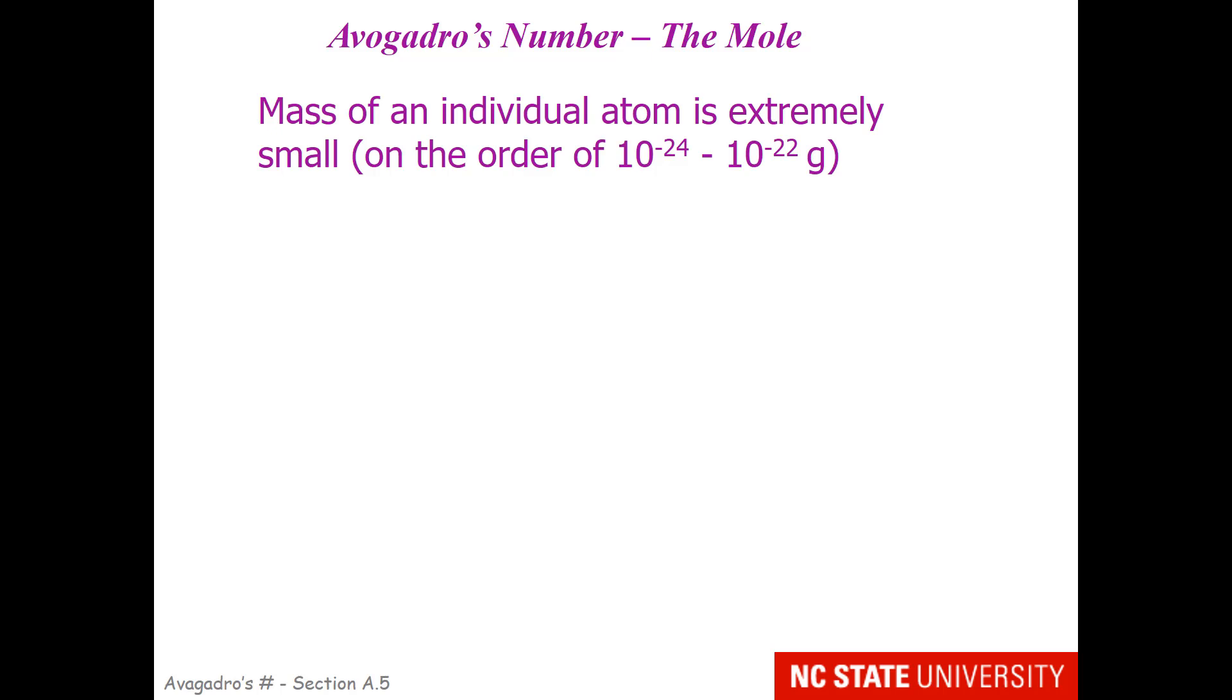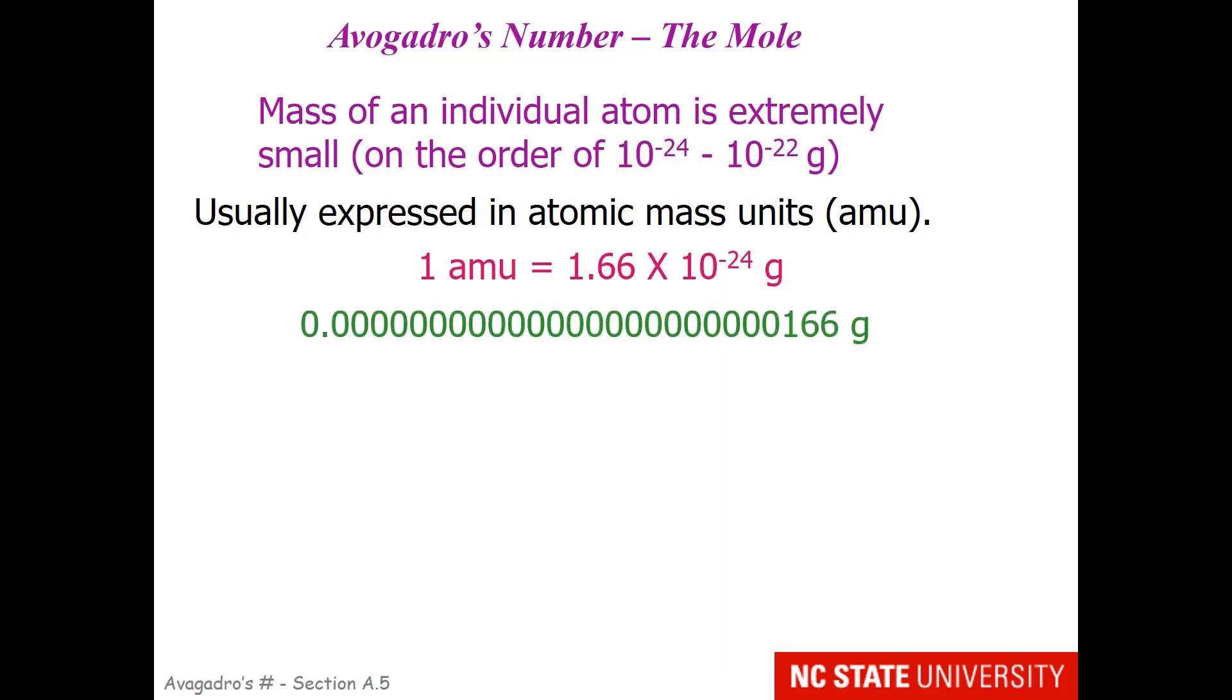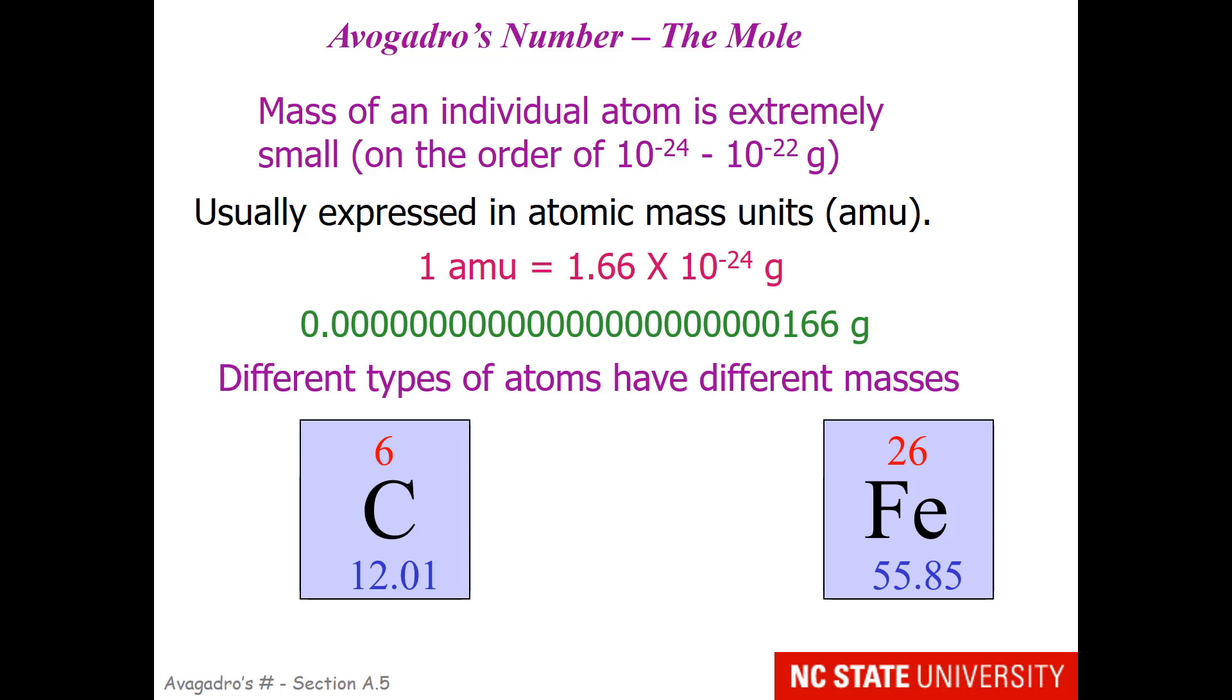So, first off, Avogadro's number, also known as the mole. The mass of an individual atom is extremely small. It's on the order of 10 to the minus 24 grams. So, when we talk about the mass of an atom, we express it in something called atomic mass units. One atomic mass unit is 1.66 times 10 to the minus 24 grams. Now, that is a lot of zeros. So, you need a very, very special balance if you're going to try and measure out atoms one by one. To make it more complicated, different types of atoms have different masses. For example, carbon has a mass of 12.01 and iron has an average mass of 55.85.